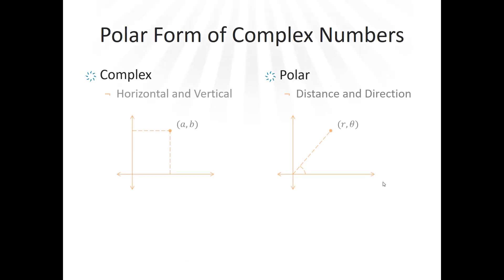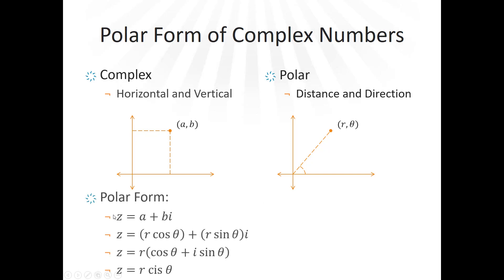So how do we express complex numbers in polar form? We know the horizontal axis is the real number line and the vertical axis is the imaginary number line. Just like converting rectangular to polar coordinates, we need to find r and theta. Since x equals r cosine theta and y equals r sine theta, we can substitute: A equals r cosine theta and B equals r sine theta, making Z equal to r cosine theta plus i r sine theta.